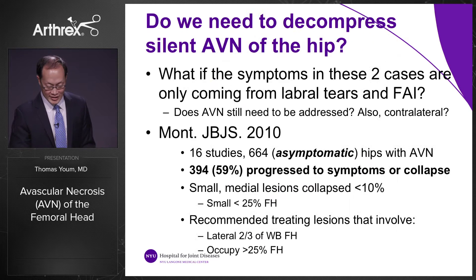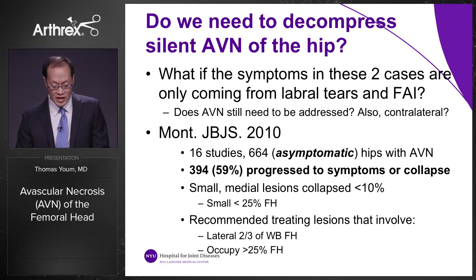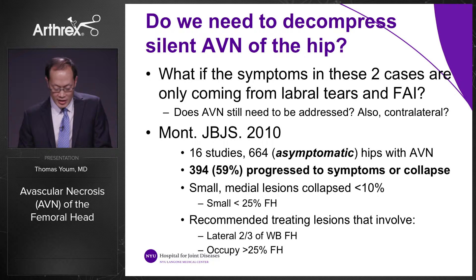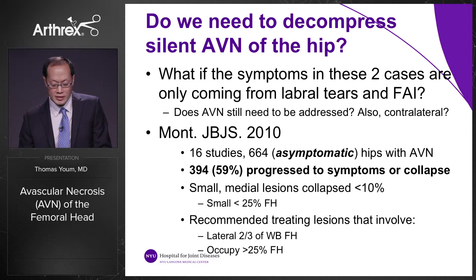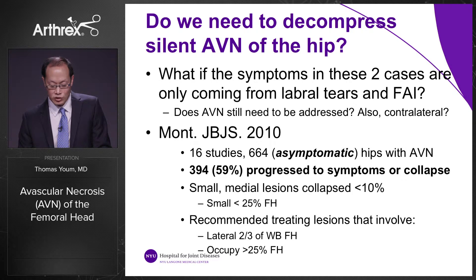Why do we need to decompress an asymptomatic avascular necrosis of the hip? Mont in JBJS 2010 reviewed 16 studies with 664 asymptomatic hips with AVN and found that 59% — or 394 hips — progressed to symptoms or collapse. Small or medial lesions collapsed less than 10% of the time. It is recommended to treat lesions involving the lateral two-thirds of the weight-bearing femoral head that occupy greater than 25% of the femoral head.